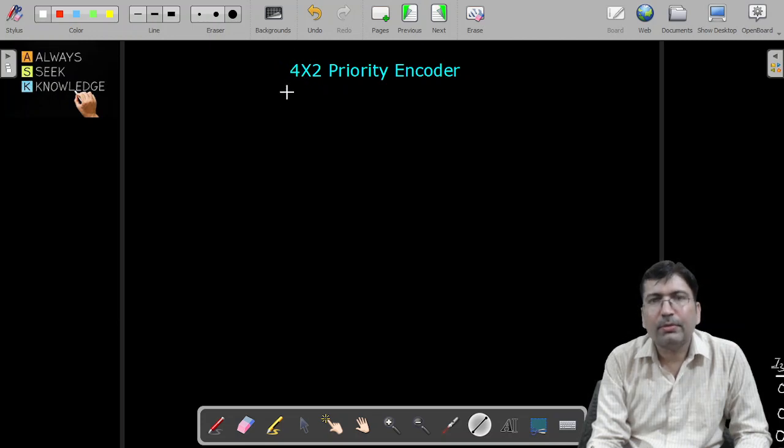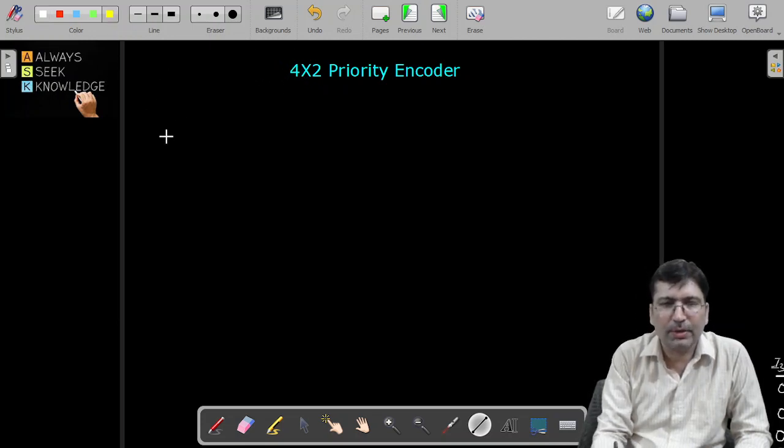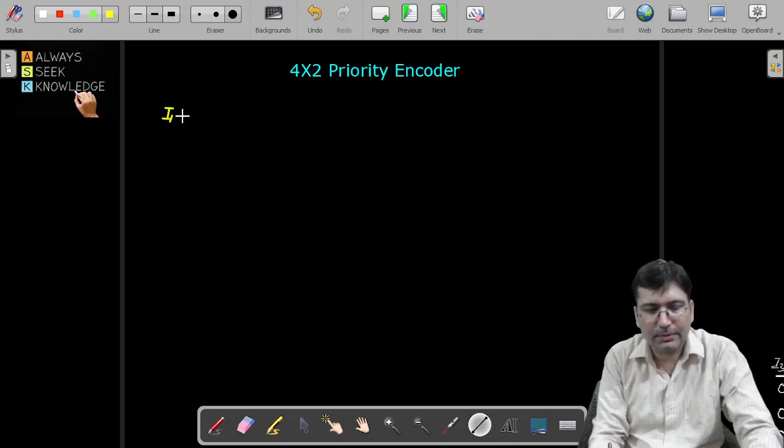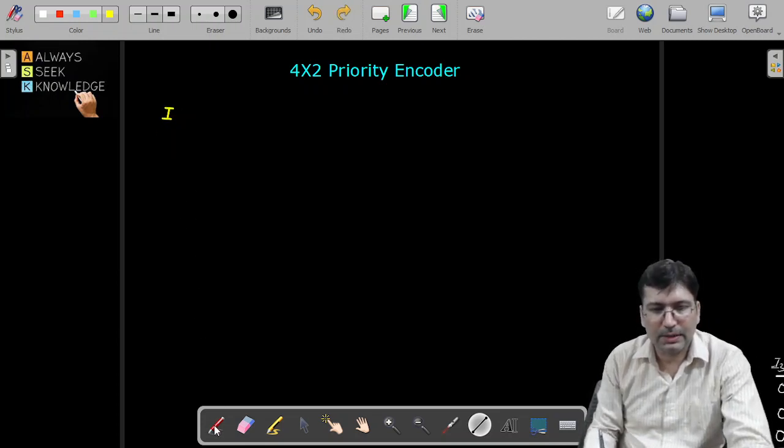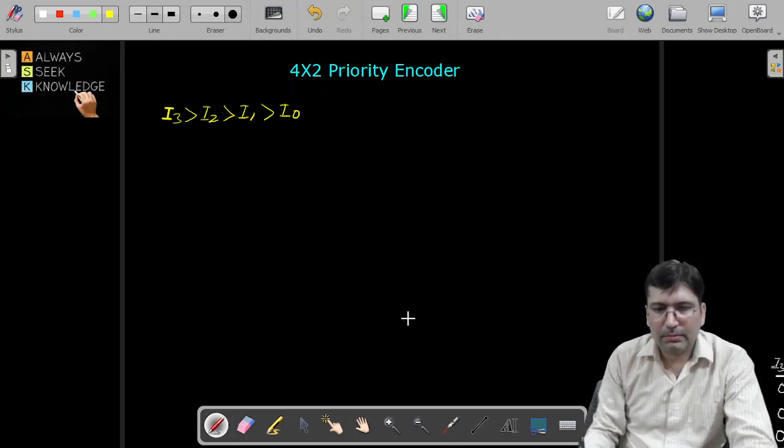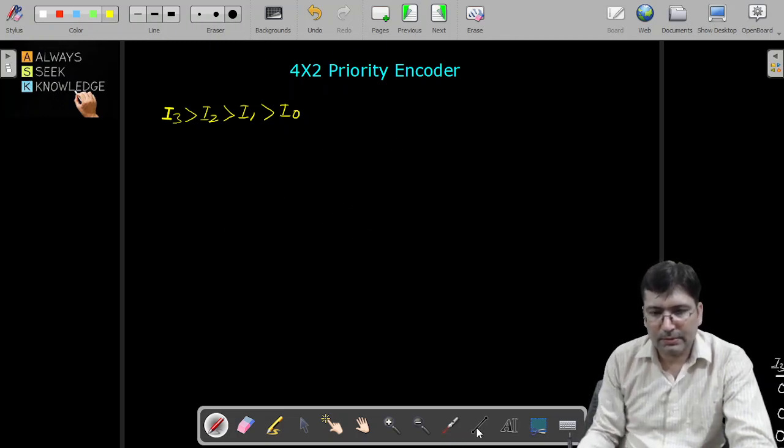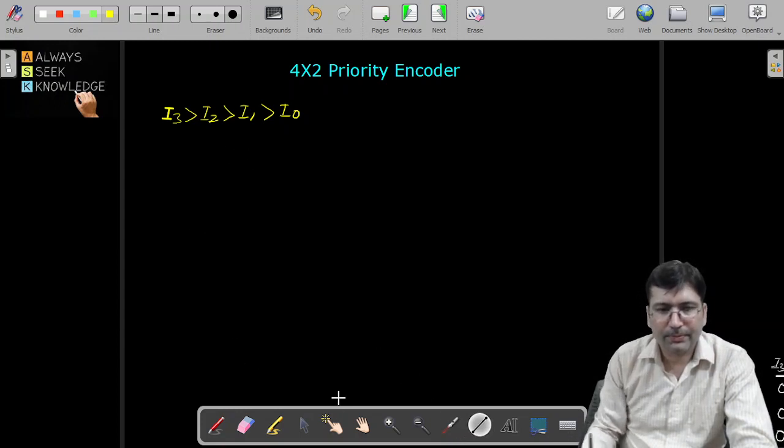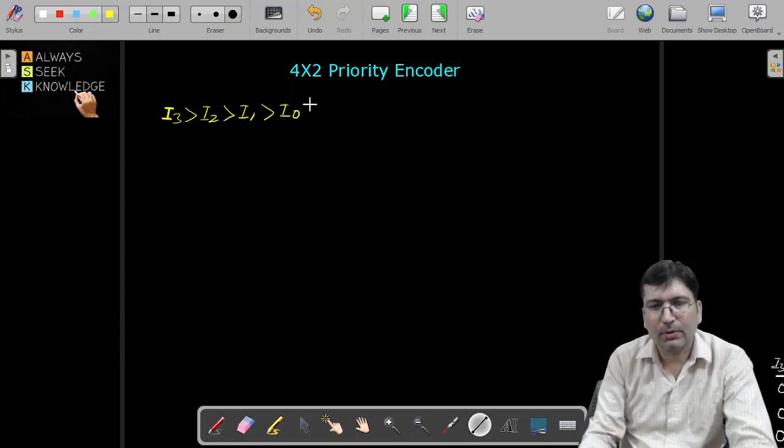If we allocate the priority to each input like this, let's say i3 is having more priority than i2, which has more priority than i1, and i1 is having more priority than i0. Then we decide the boolean expression for the encoder. Let's see how we can do that and draw the truth table.